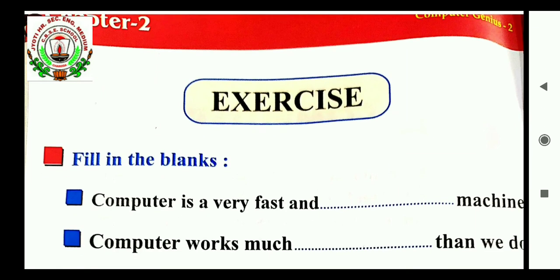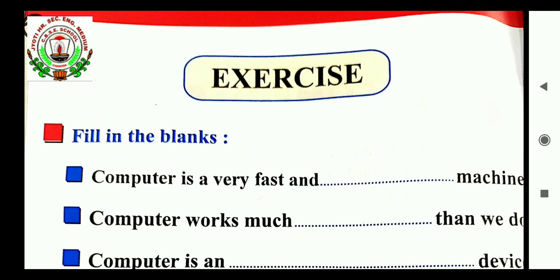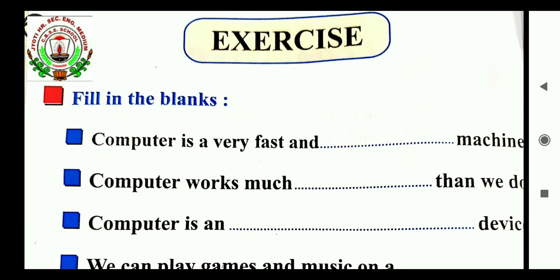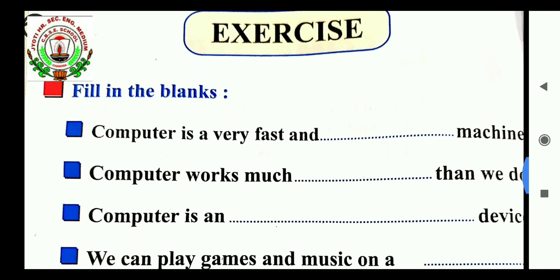Fill in the blank. Computer is a very fast and dash machine. Computer is a very fast and accurate machine. You will do this exercise on your computer copy. Next. Computer work much dash than we do. Much faster than we do. Next. Third. Computer is an dash device. So, answer is, computer is an electronic device.